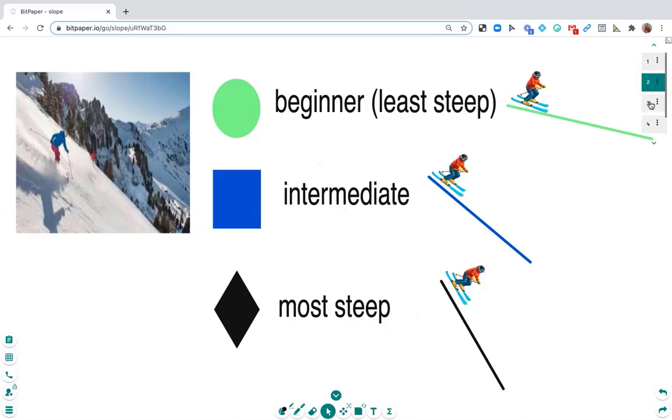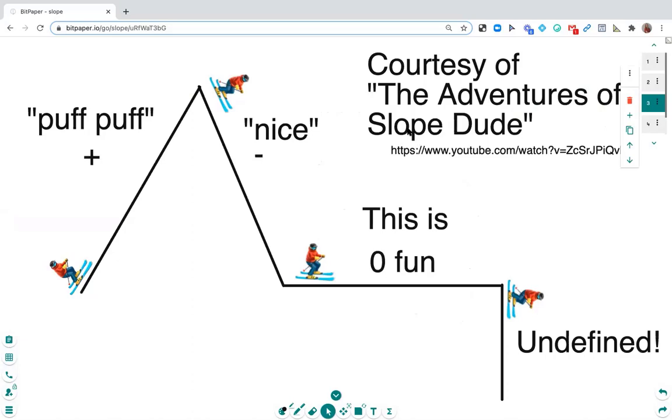So now we're going to look at the different types of slope. Now this is courtesy of the Adventures of Slope Dude. So if you've never watched the video, you should definitely check it out on YouTube. I have dropped the link here on the screen. And in the Adventures of Slope Dude, he goes over the four different types of slope, the first one being a positive line.